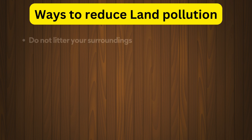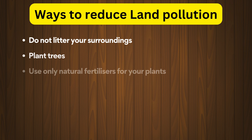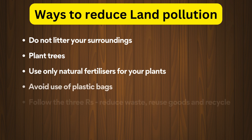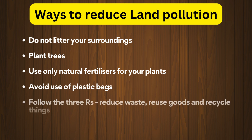What are the ways to reduce land pollution? Do not litter your surroundings. Plant trees. Use only natural fertilizers for your plants. Avoid use of plastic bags. Follow the 3 Rs: reduce waste, reuse goods, and recycle things.